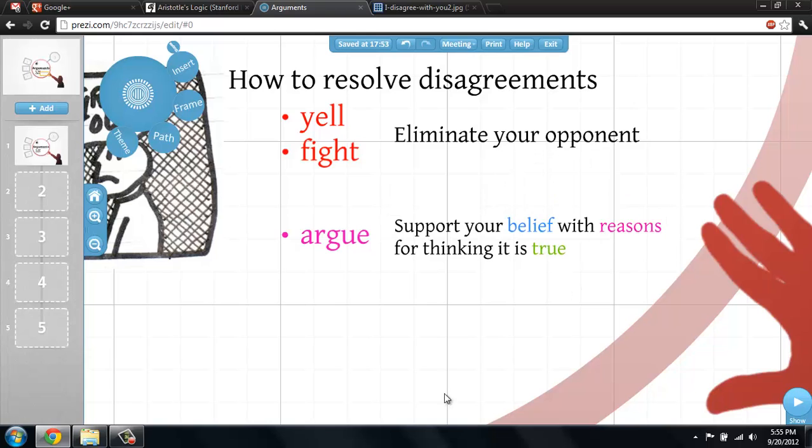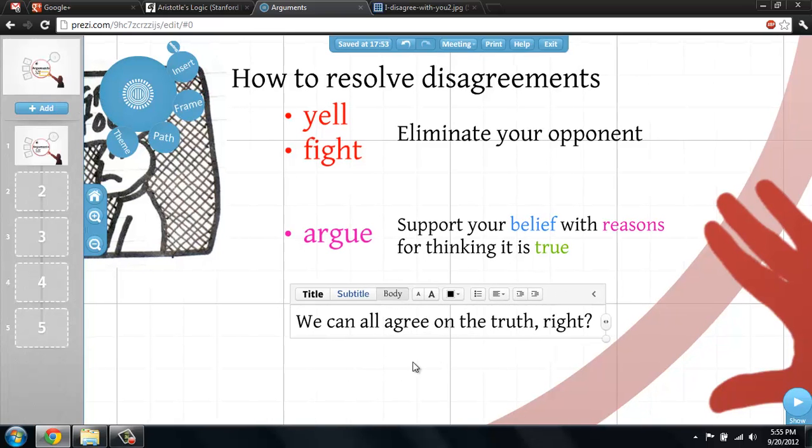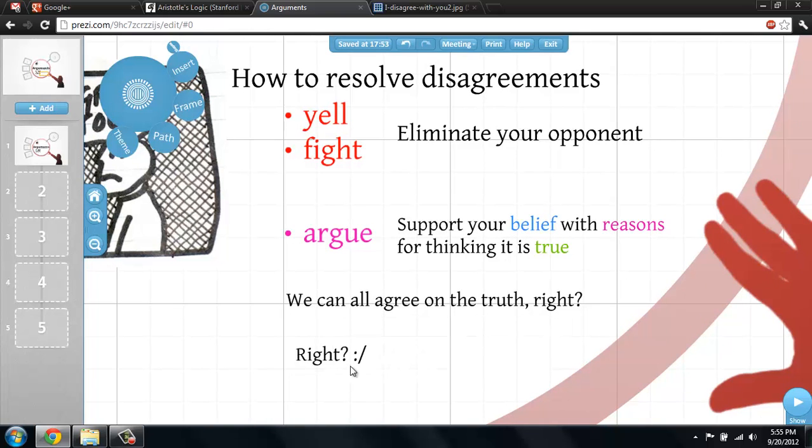The idea is that if you have good reasons for holding your belief, then others should be able to inspect those reasons to evaluate the truth of your claims. If your claims stand up to scrutiny, then others have good reason to agree with you, thus ending disagreement in consensus instead of violence. This process of exchanging reasons through argument is called rationality, and it's part of what makes us human.